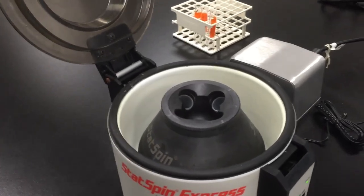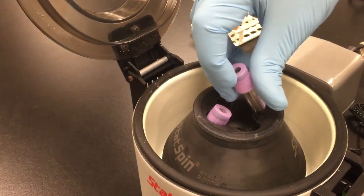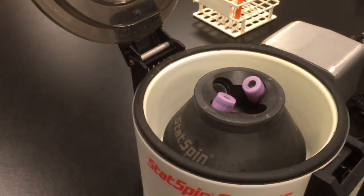Now when you place them inside of the centrifuge, you are going to make sure that they are on opposite ends to make sure that they are balanced.